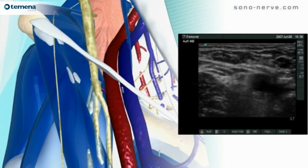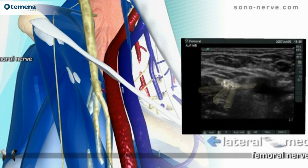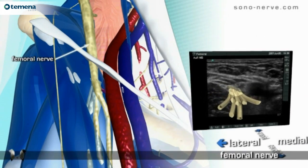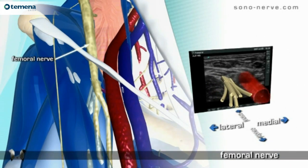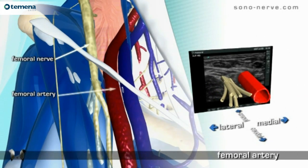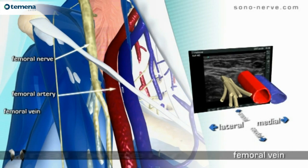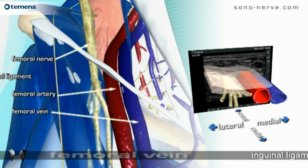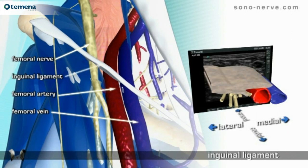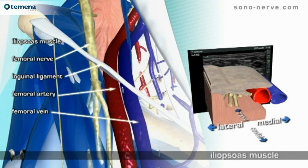Anatomy: the femoral nerve, femoral artery, femoral vein, inguinal ligament, and iliopsoas muscle.